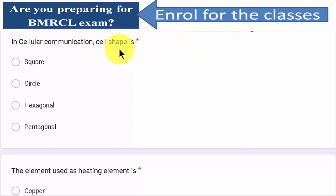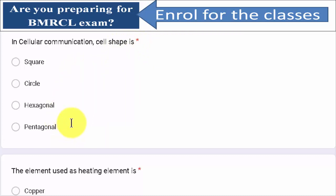In the case of cellular communication, the cell shape options are square, circle, hexagonal, or pentagonal. All the other options are trapping options only. We know that the cell structure should be hexagonal. The hexagonal structure is used in cellular communication.